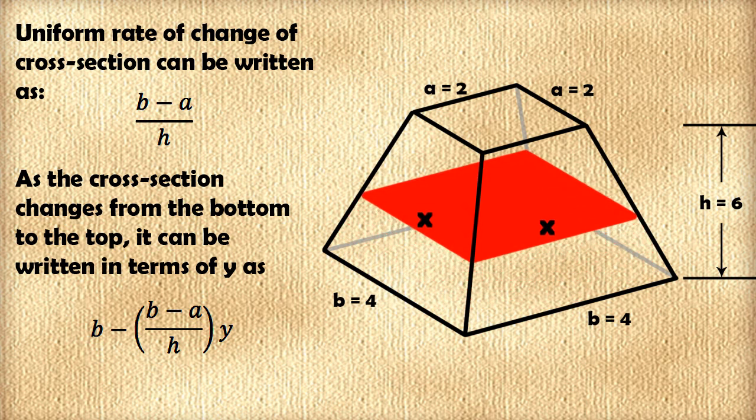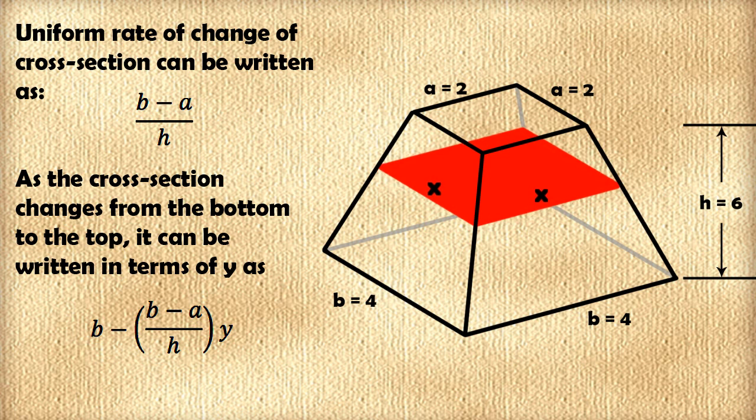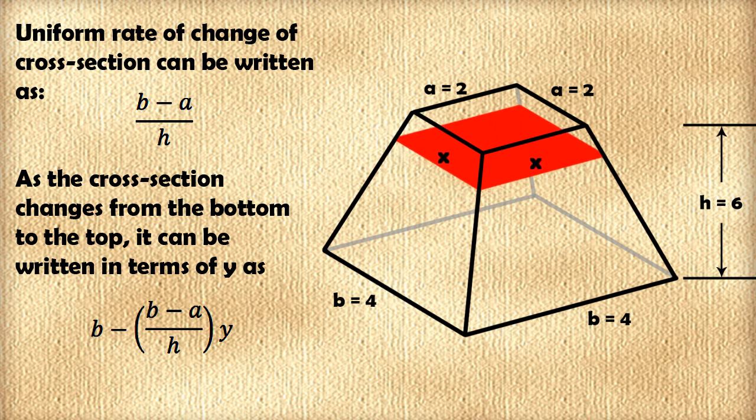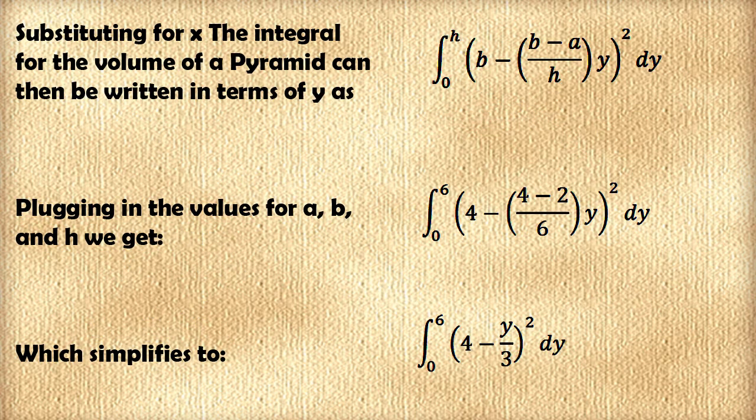As the cross-section changes from the bottom to the top, x can be written in terms of y as b minus the rate of change, which is b minus a over h, times y. Substituting this value for x, the integral for the volume of the pyramid can be written as the integral from 0 to h, b minus the rate of change, b minus a over h, times y, all squared dy.